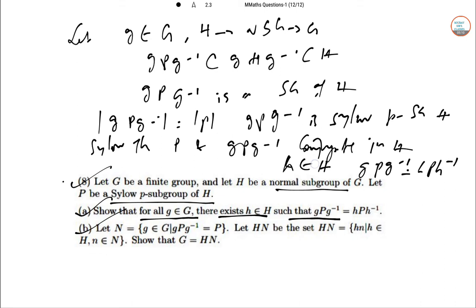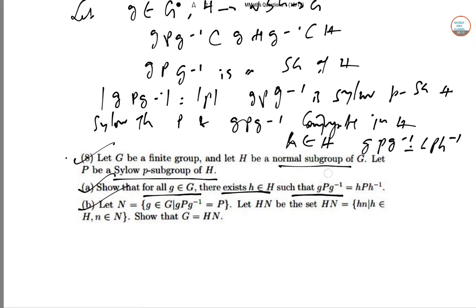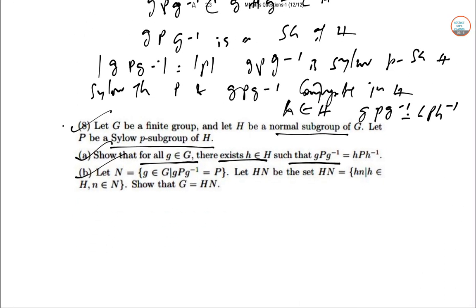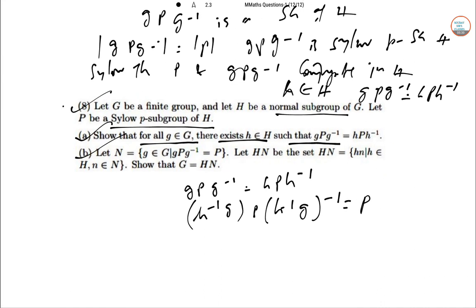Part (b): Let N={g∈G|gPg⁻¹=P}. Let HN be the set HN={hn|h∈H, n∈N}. We should show G=HN. Starting with gPg⁻¹=hPh⁻¹, we get h⁻¹gP(h⁻¹g)⁻¹=P. So n=h⁻¹g∈N, and g=hn∈HN. Thus equality G=HN is proved.